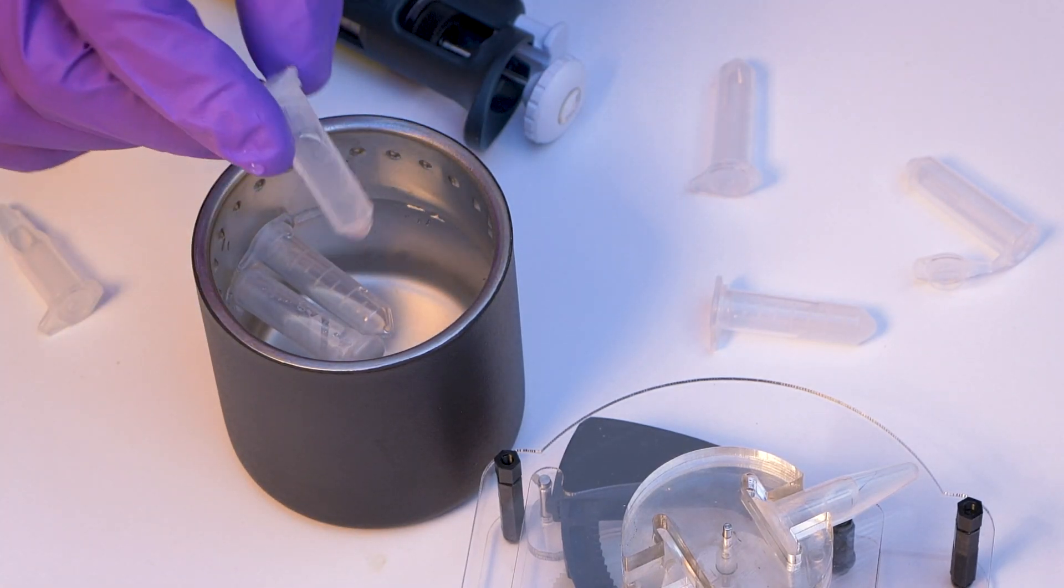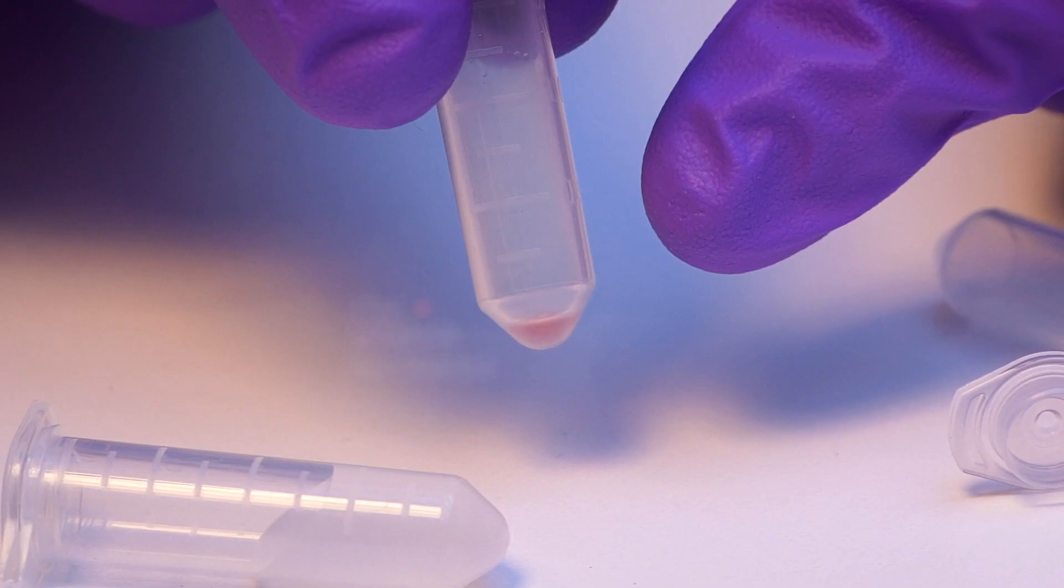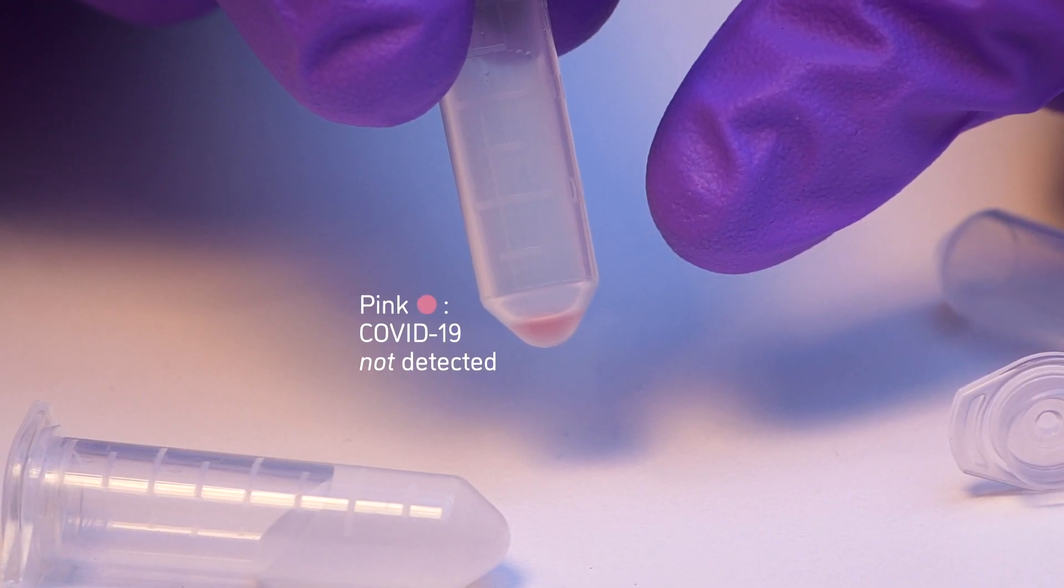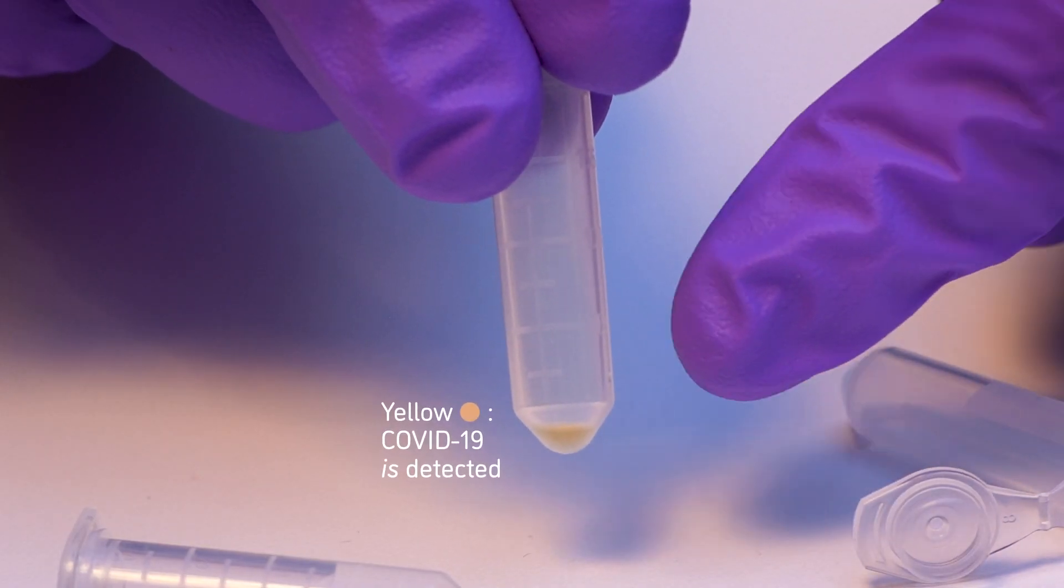So at the end of the 30 minutes, we can check. If there's no viral RNA present, the reaction mixture will stay pink. If there is viral RNA present, you'll see this pH change, and the reaction mixture will change to this yellow.